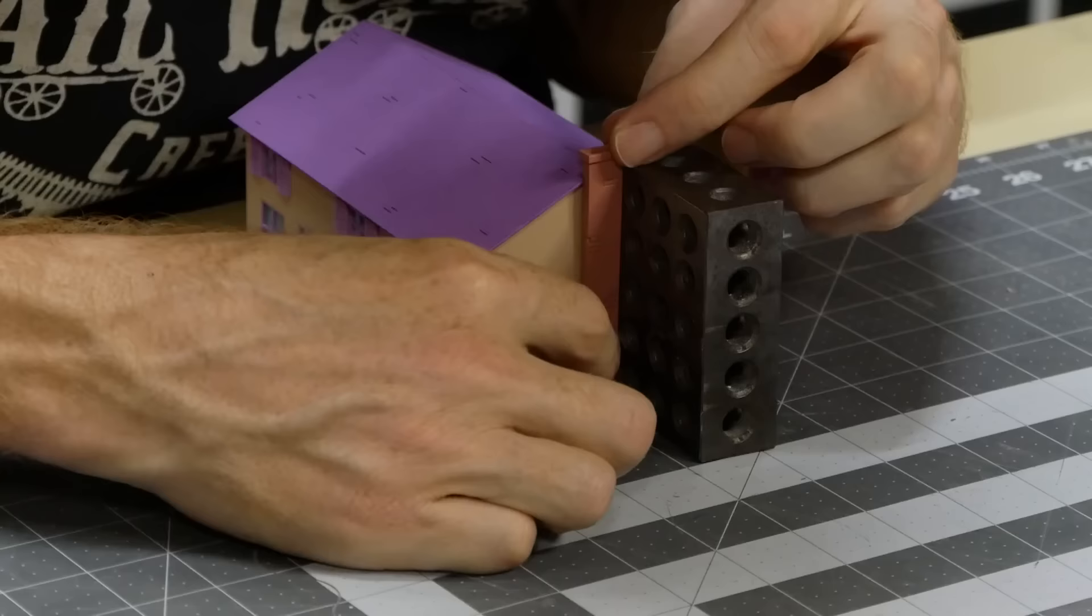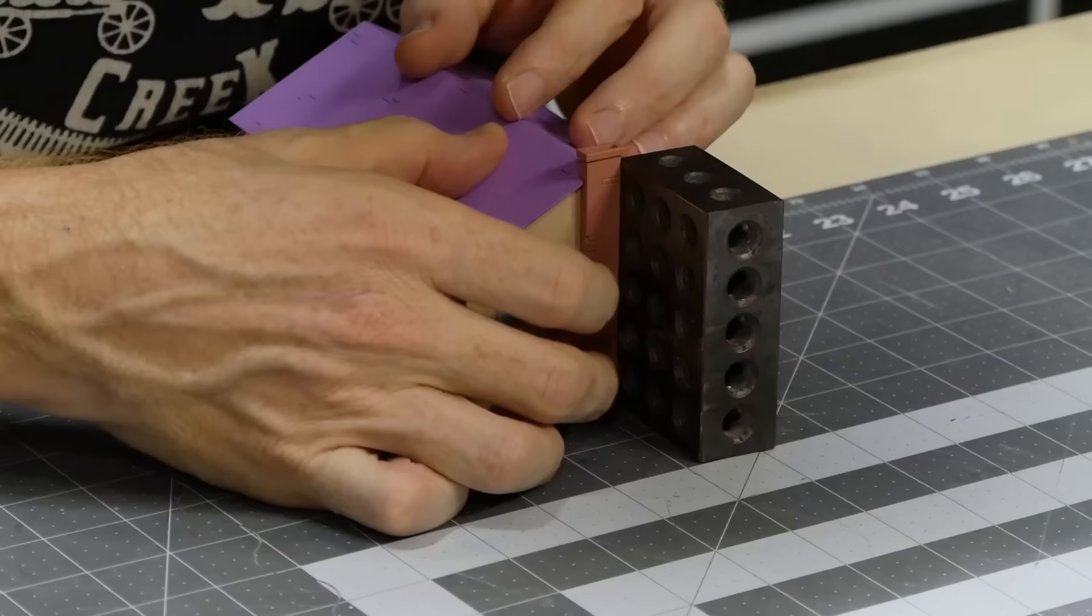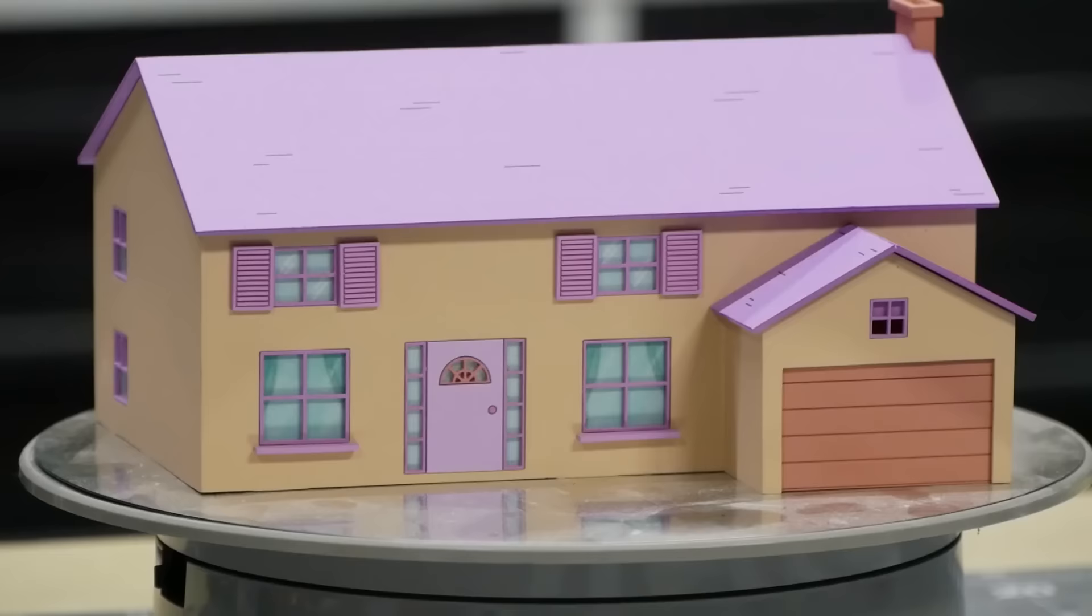I used a machinist block to ensure the chimney was straight, unlike the 3D printed house where I accidentally broke the chimney while trying to straighten it as the epoxy was hardening. That's pretty much it for laser cutting and the house construction.